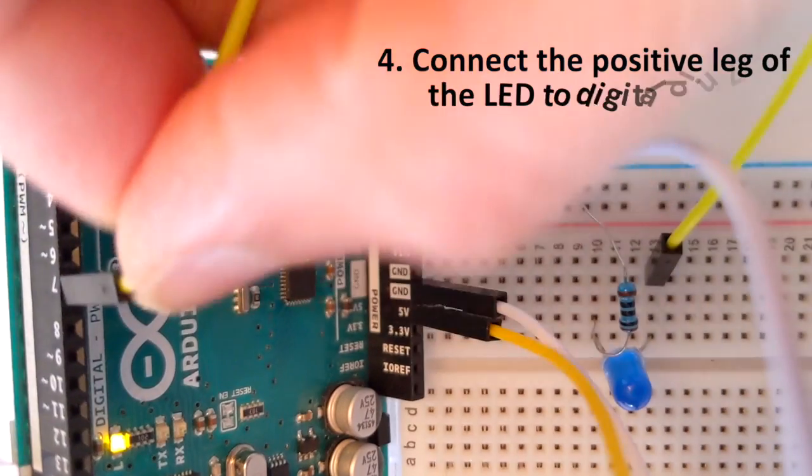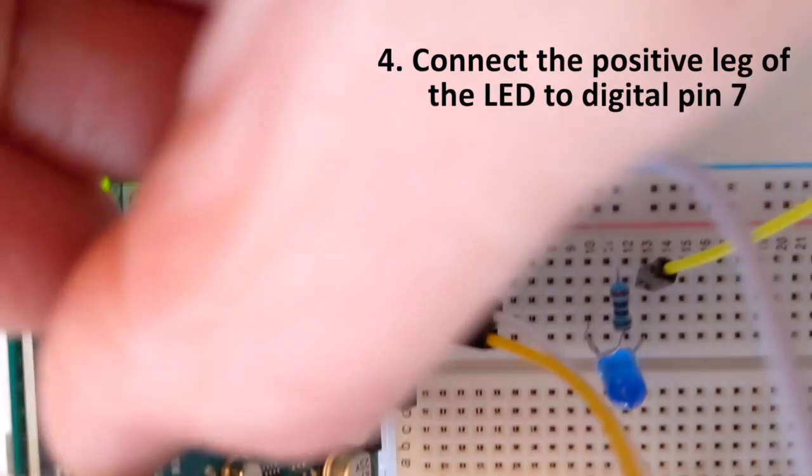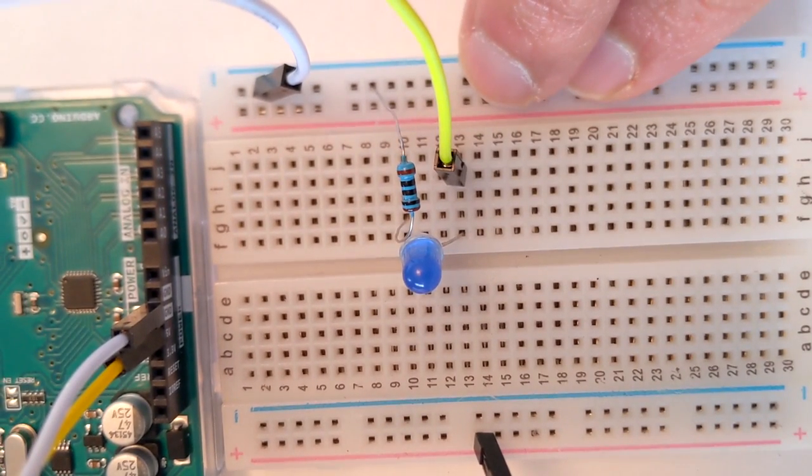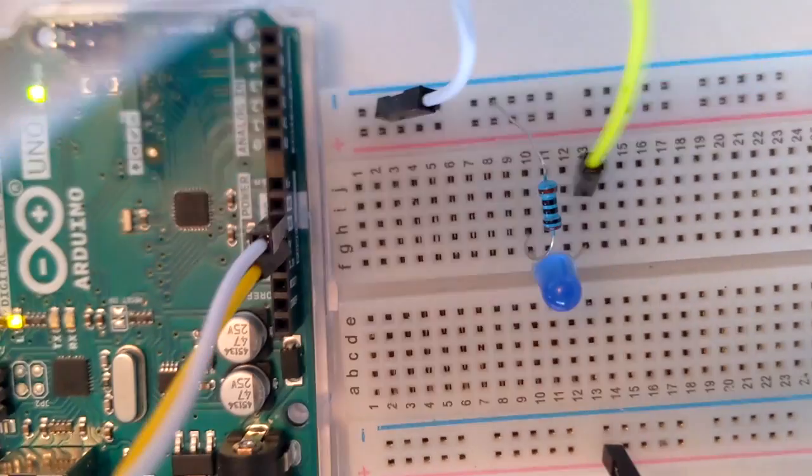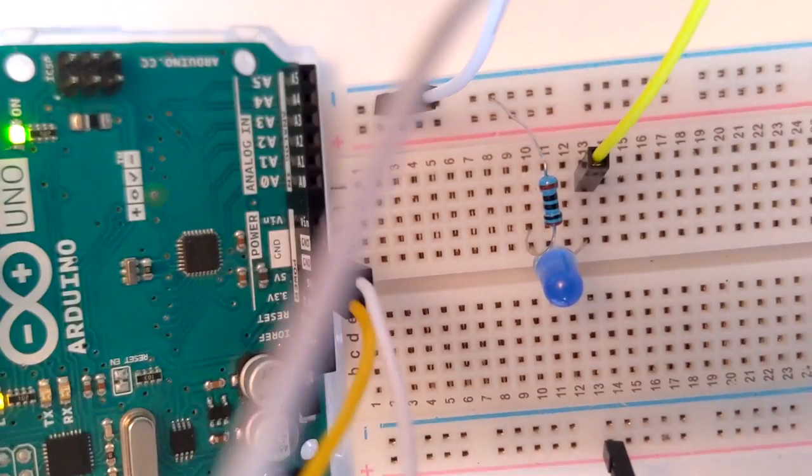Now that you have rewired your LED so that it is connected to digital pin 7, we are ready to write the code. As you can see, the LED turned off before it was on because we had given it power when we had connected it to the positive power rail. And now it's on digital pin 7.